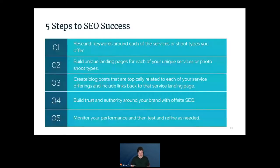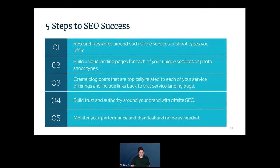SEO can be very daunting, so here are five easy-to-digest steps. First, research keywords around each of the services or shoot types you offer. Next, build a unique landing page for each individual service offering. Then create blog posts topically related to each service and include links back to the service landing page. Next, build trust and authority with off-site SEO — that includes building backlinks, setting up social media profiles, and setting up a Google Business Profile. Lastly, keep monitoring your performance and test and refine things as needed.